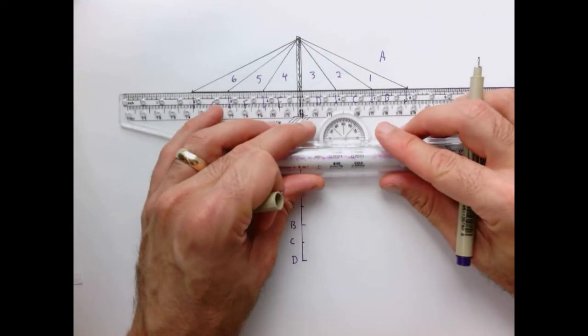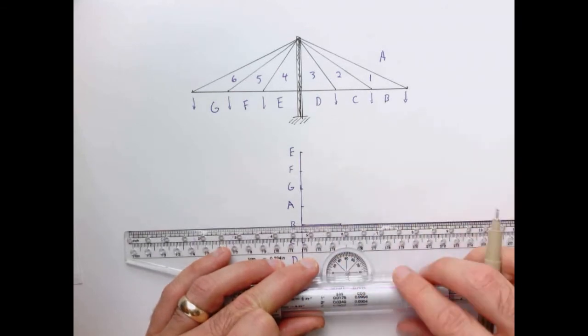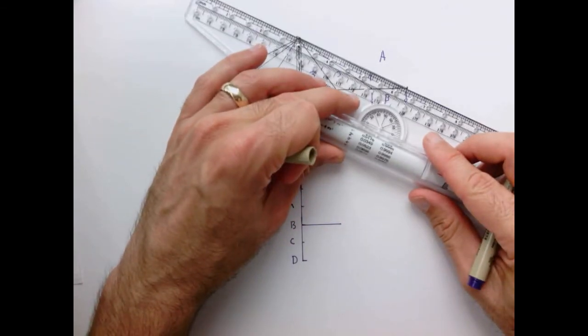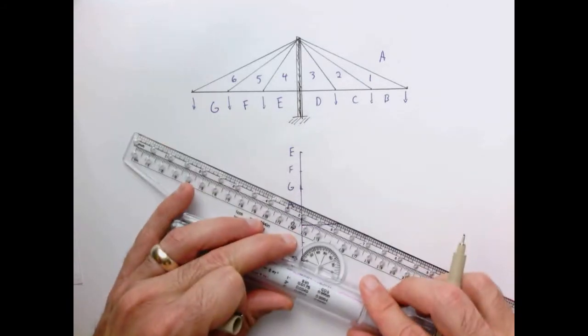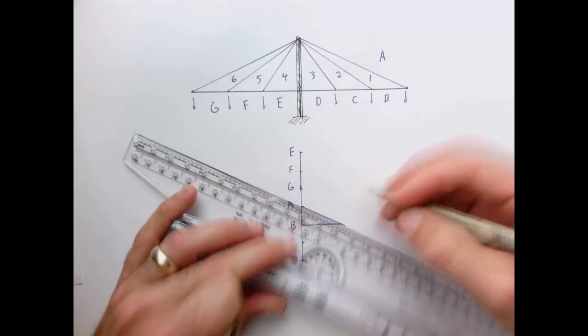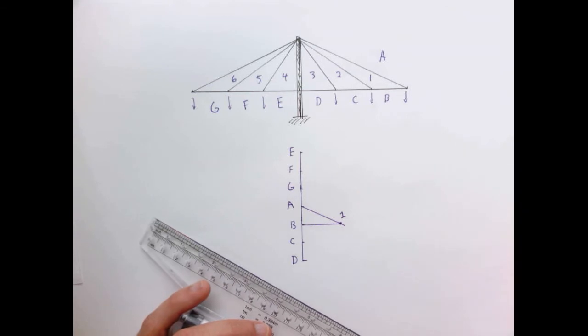So the vector coming out of B to one is going to be horizontal. Coming out of A is going to be the angle of the cable. Where those two lines intersect is point one.